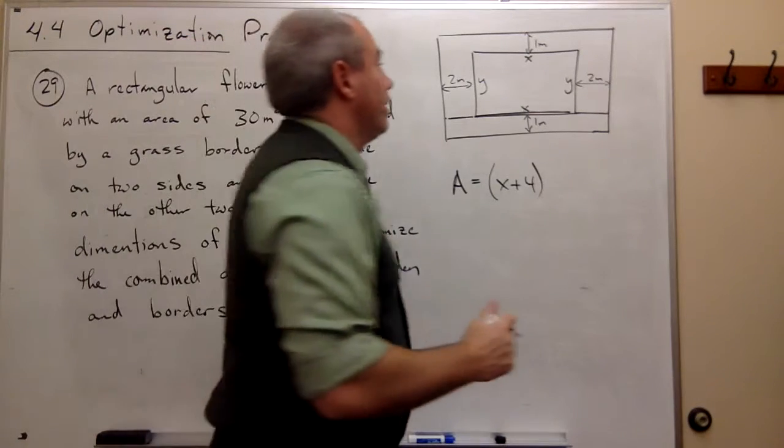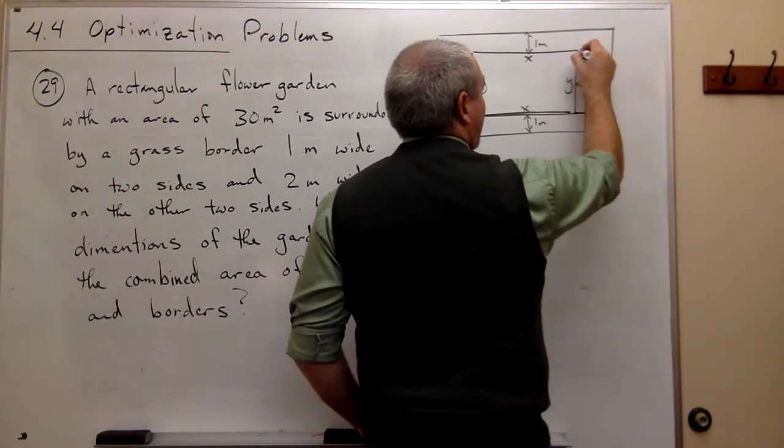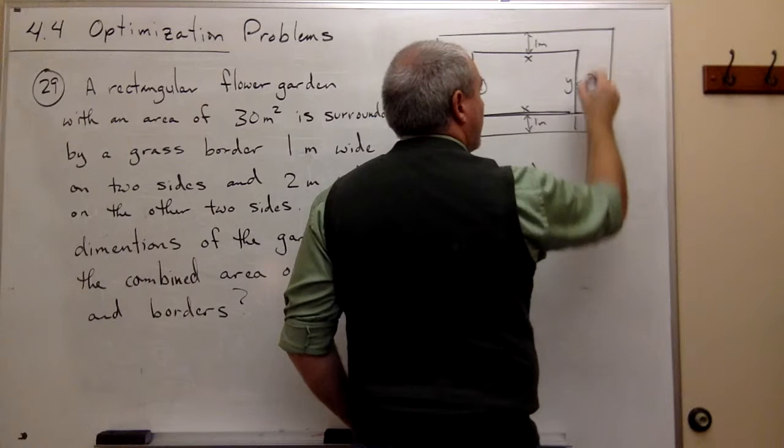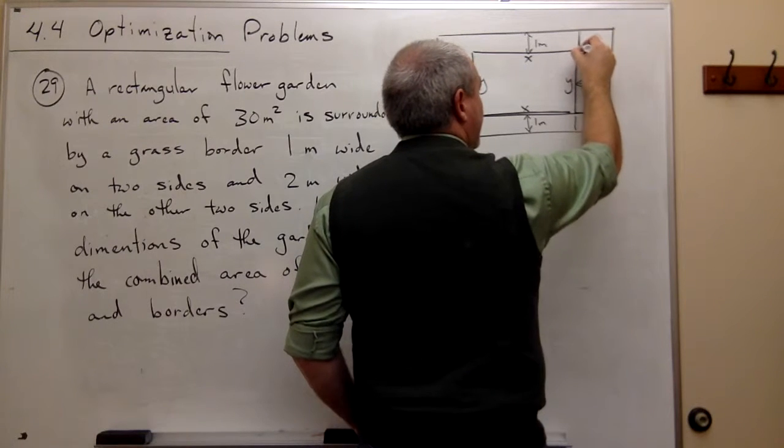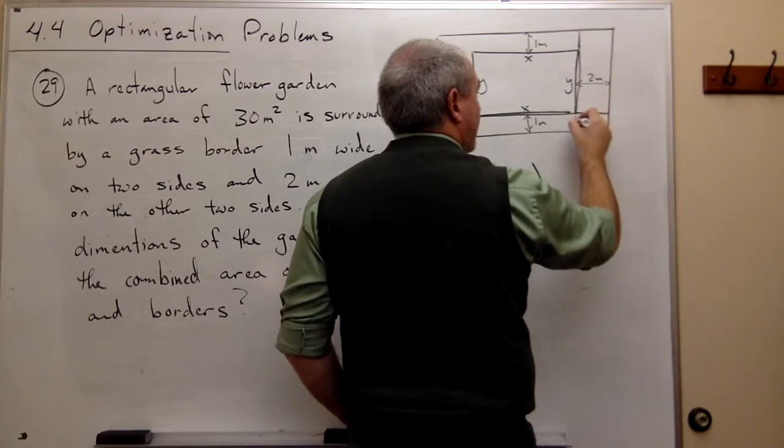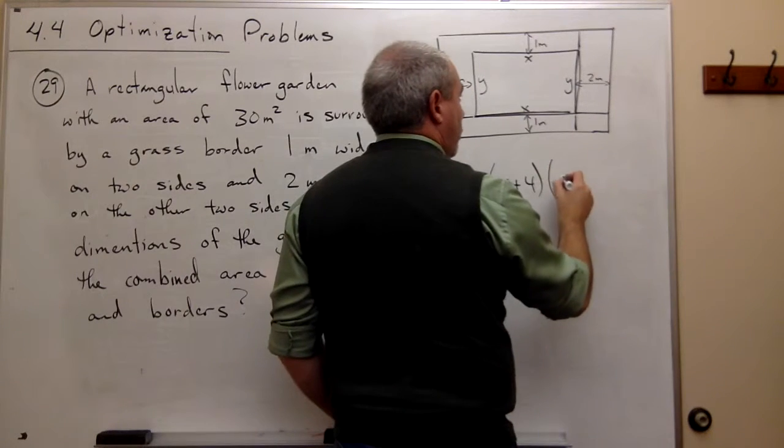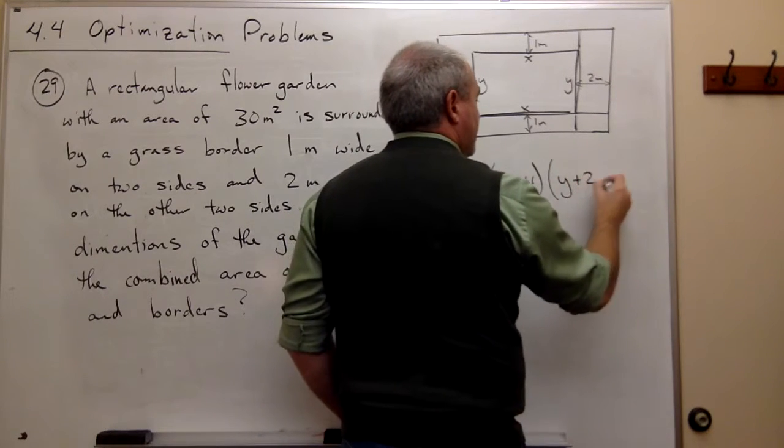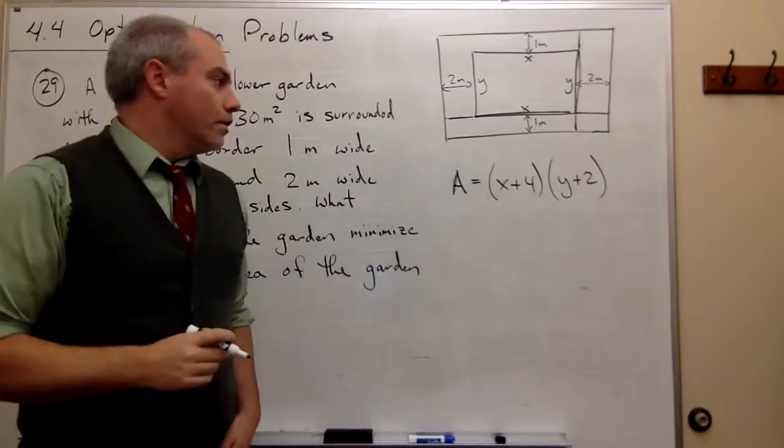The width, if we're going this way, it's y here plus the margins. But there's a 1 here, there's a y here, and there's a 1 here. So that would be y plus 2.